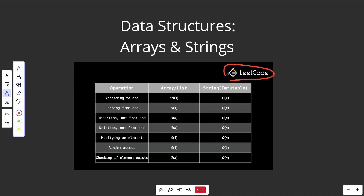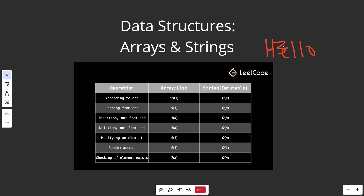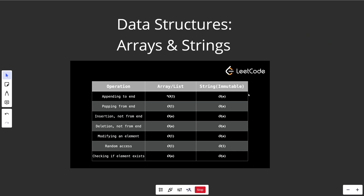This is the full chart from LeetCode. Dynamic arrays in Python are called lists; strings are assumed immutable. For strings: appending to the end is O(N) since it creates a new string; popping from the end is O(N); insertion, deletion, and modifying an element are all O(N). Accessing a position is O(1). Checking if a character exists in a string — like whether Z is in 'HELLO' — requires scanning all positions, so that's O(N).